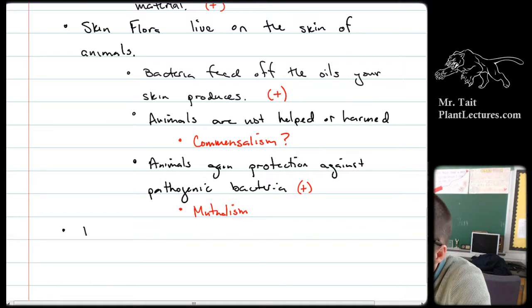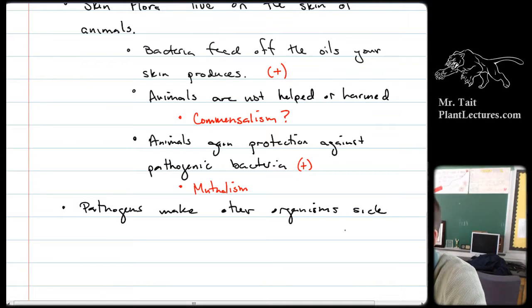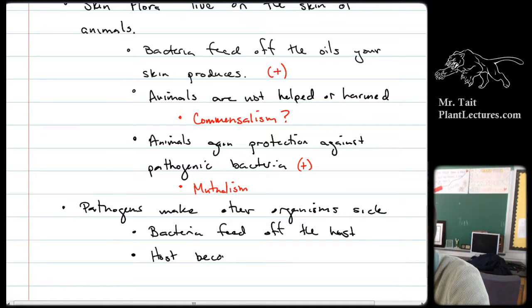We know about pathogens. Those pathogens make other organisms sick. What does the pathogen gain from it? Why is the bacteria there in the first place? Food. It's feeding off of the host. And then what happens to the host? It doesn't have to die. The host becomes ill from toxins. So this is a positive negative situation which means this is parasitism.